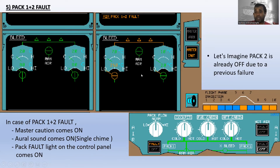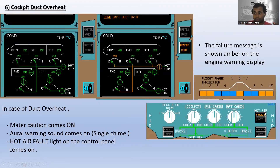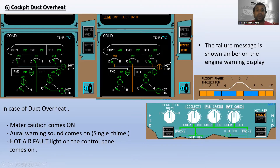In case of cockpit duct overheat, master caution comes on, oral warning sounds as a single chime, and the hot air fault light on the control panel comes on in amber color. On the conditioning page, the line becomes amber. The failure message reads 'cockpit duct overheat.' This occurs in flight phases one, two, six, nine, and ten.